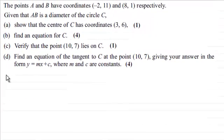Hi there. Now for this question, we're told that the points A and B have coordinates (-2, 11) and (8, 1) respectively. Given that AB is the diameter of the circle C, we first have to show that the center of C has coordinates (3, 6) for 1 mark.